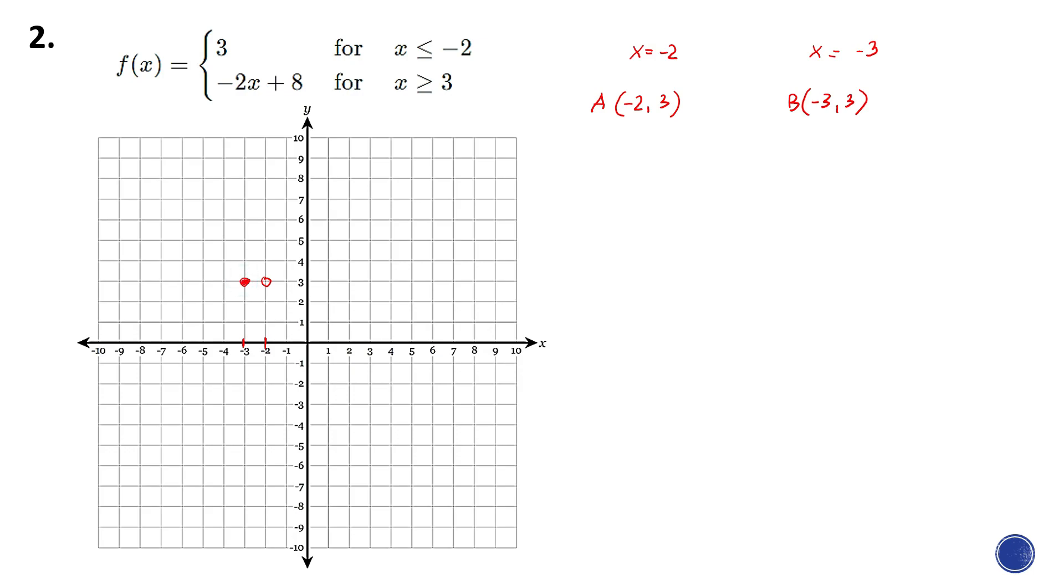Now the first point, is it an open circle or a closed circle? Look at the given. It's less than or equal to, so that should be a closed circle. To draw the line, it should be going on the left side because we have a less than symbol. This is the first one.